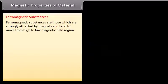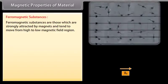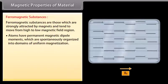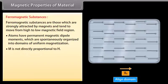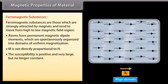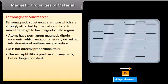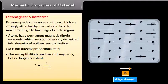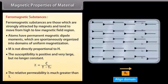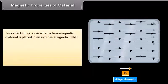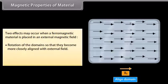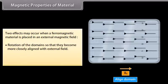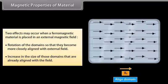Ferromagnetic substances are strongly attracted by magnets and tend to move from low to high magnetic field regions. Their atoms have permanent magnetic dipole moments spontaneously organized into domains of uniform magnetization. M is not directly proportional to H, and the susceptibility is positive and very large but not constant: xi = C / (T - Tc). The relative permeability is much greater than 1. When placed in an external magnetic field, domains may rotate to align with the field or domains already aligned may increase in size.